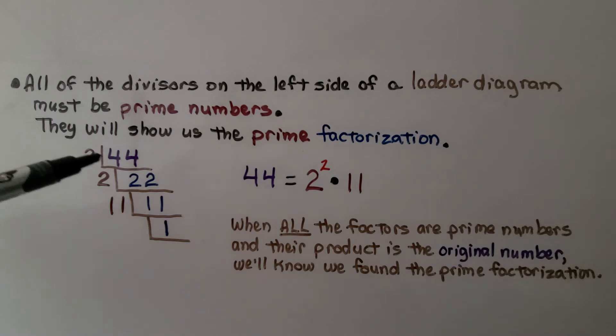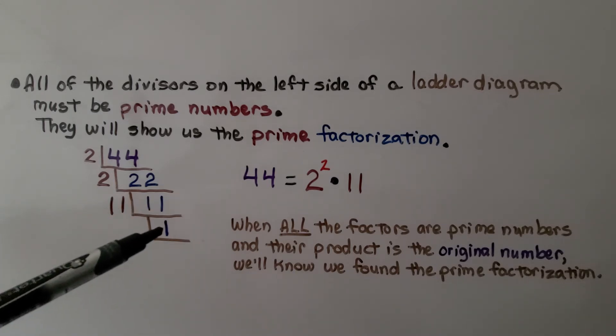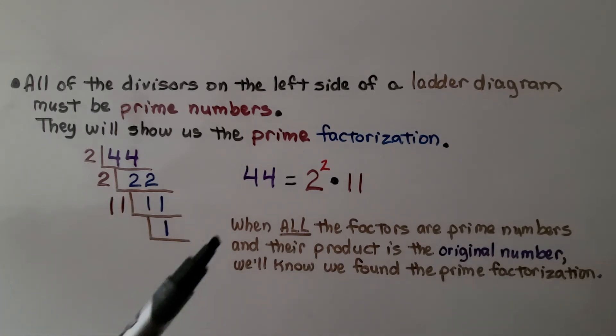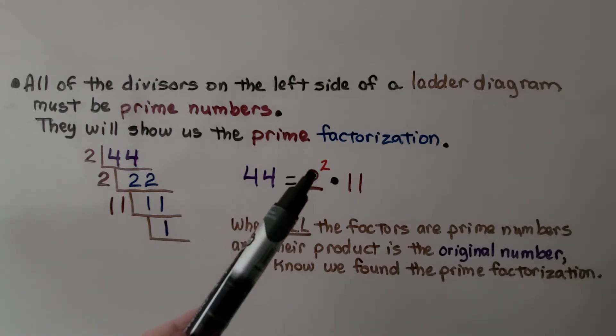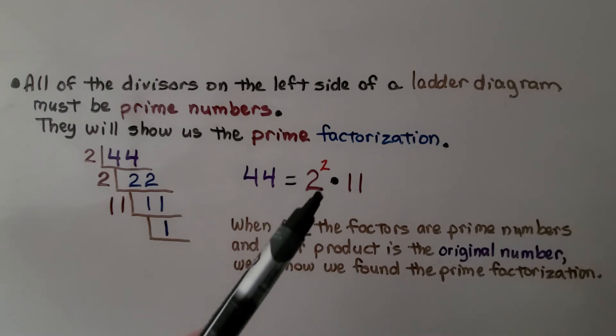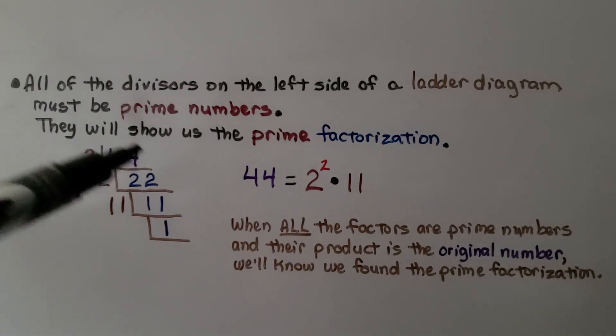We have 44. If we divide it by 2, we get 22. We can divide that by 2, we get 11. And the only factors for 11 are 11 and 1. The prime factorization for 44 is 2 raised to the second power times 11. When all the factors are prime numbers and their product is the original number, we'll know we found the prime factorization.